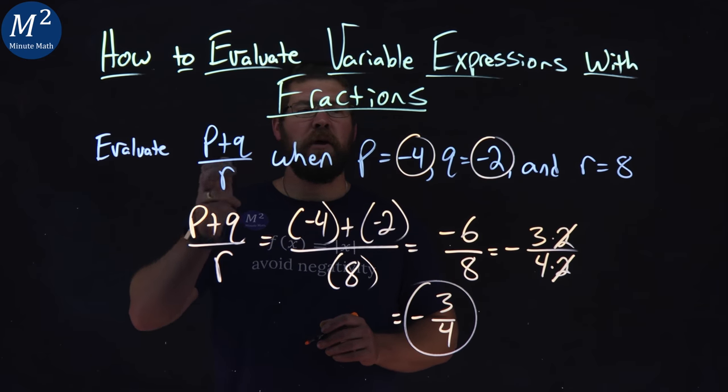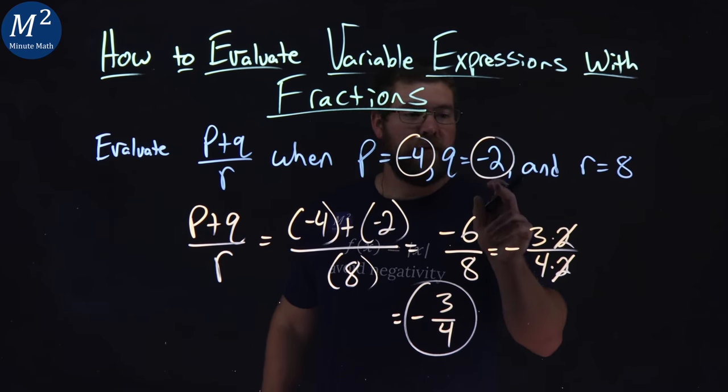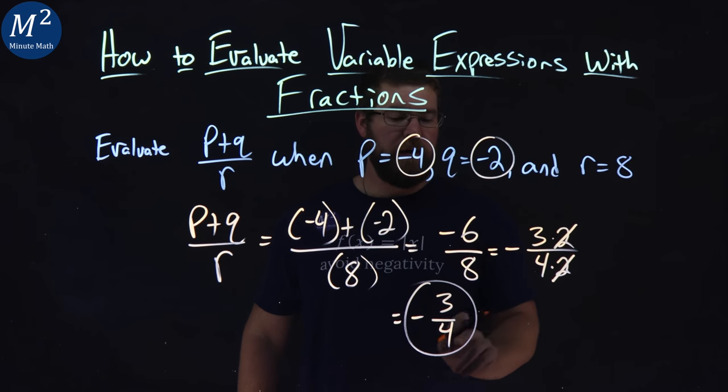We evaluated P plus Q over R when P equals negative 4, Q equals negative 2, and R equals 8, and we got negative 3 fourths.